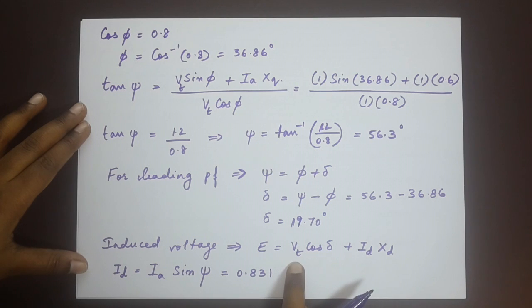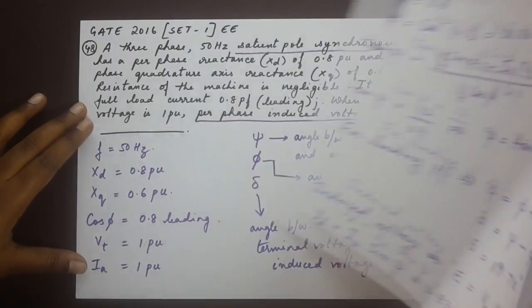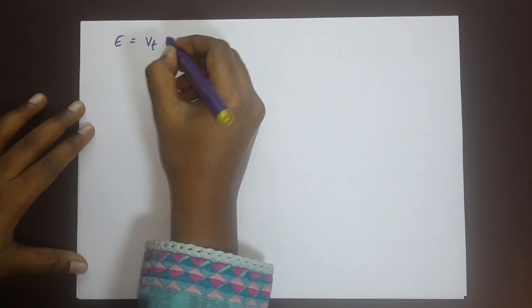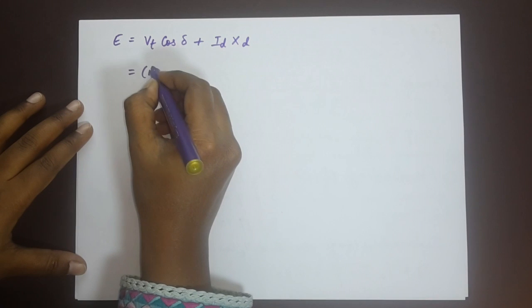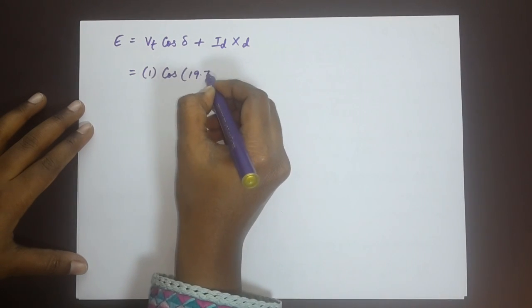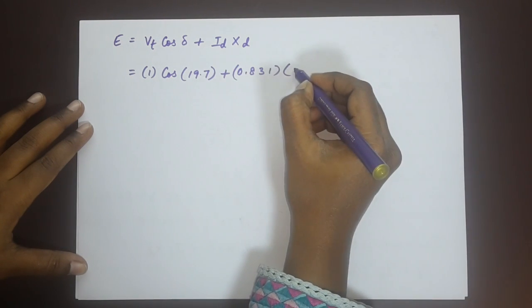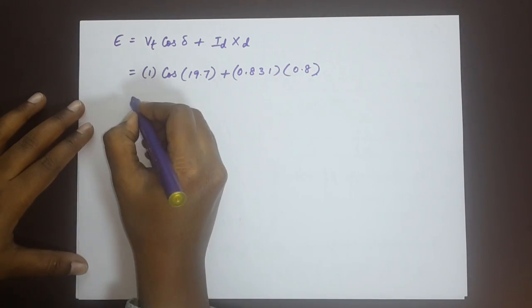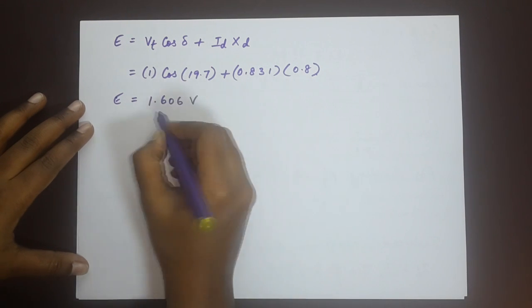So substituting id value, Xd value, Vt value and cos of delta 19.7, we will be able to find out what the value of E is. So I will just flip this sheet over so that I can write down that portion as well for you. We have E is equal to Vt cos delta plus id·Xd. Vt is 1, cos of 19.7 plus id is 0.831, Xd is 0.8. So with solving, we will obtain a value of 1.606 volts.